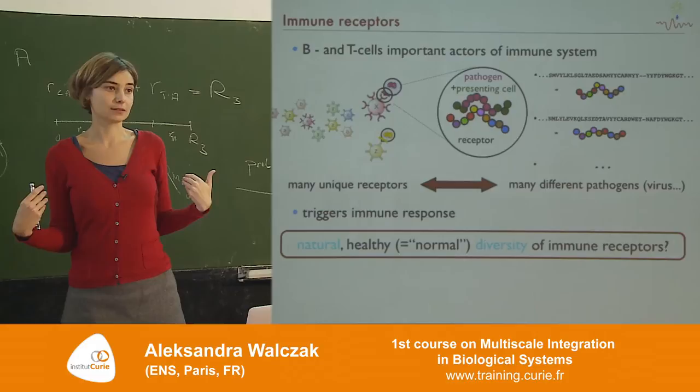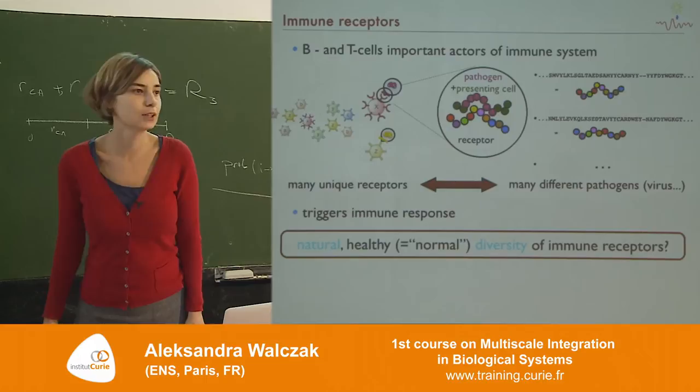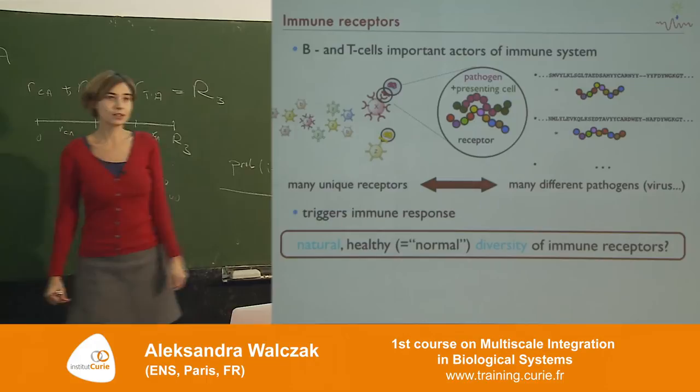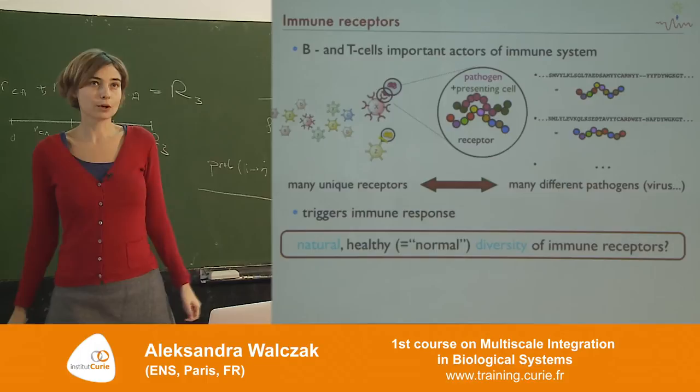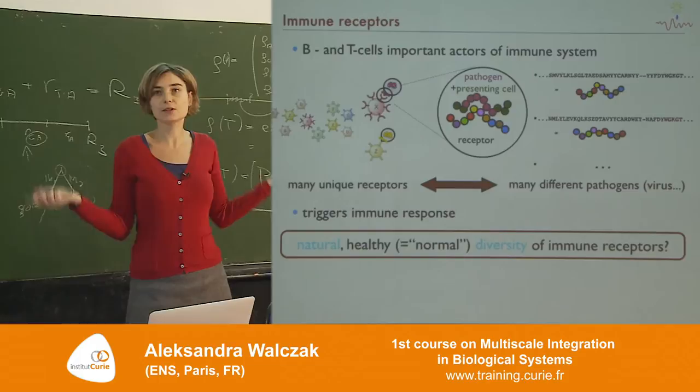What I'm interested in is asking the question of what does this diverse set of receptors look like, and what is the diversity needed to protect us from the different pathogens we constantly encounter? By 'normal' I mean somebody who's not really sick, doesn't have a serious disease, doesn't have serious autoimmunity issues — just somebody who can walk around and stay relatively healthy for most of the time. So how diverse does this set of receptors need to be in order to protect us?